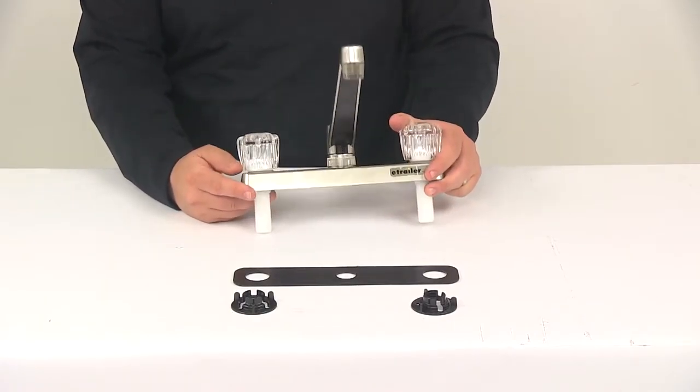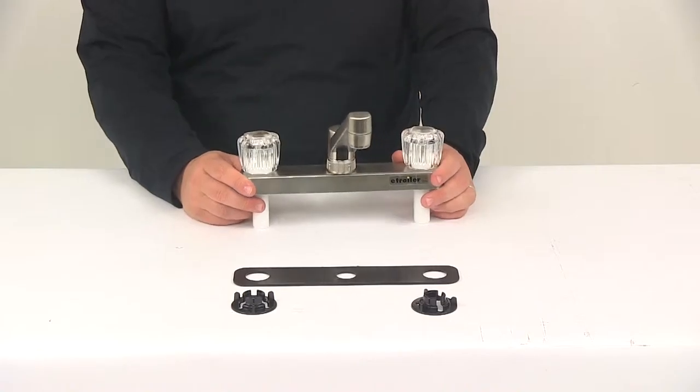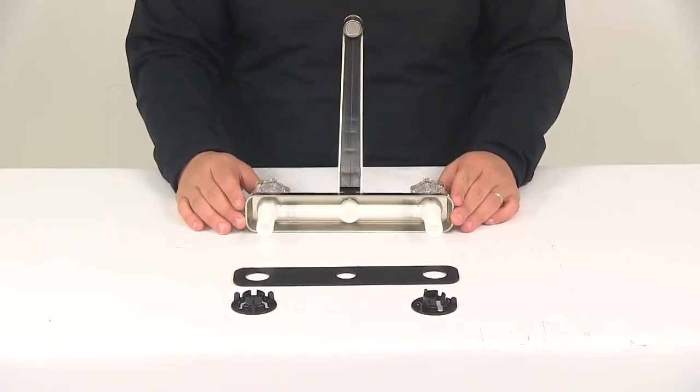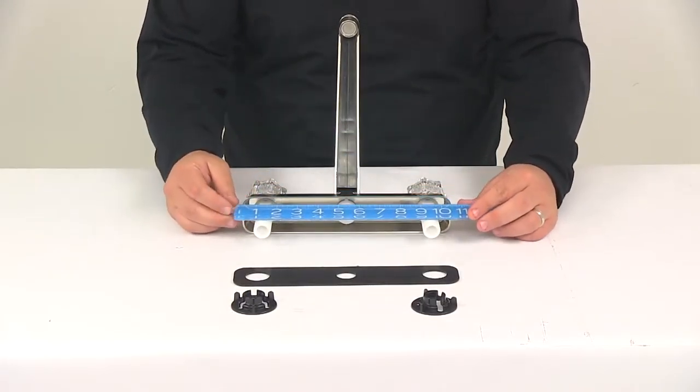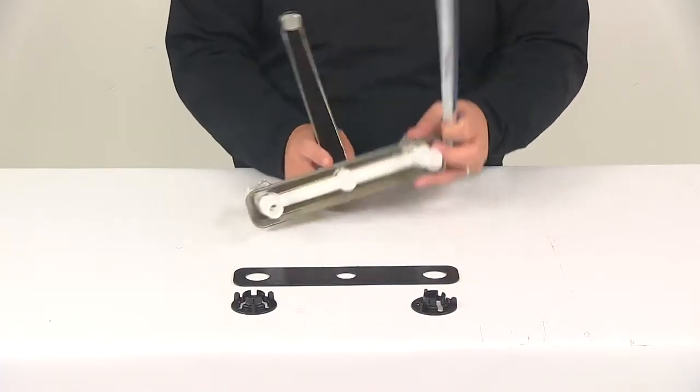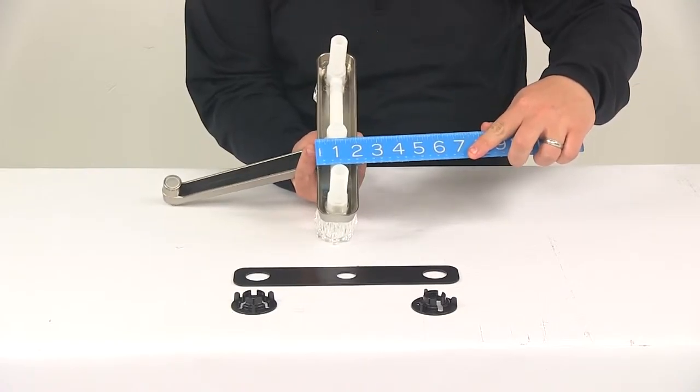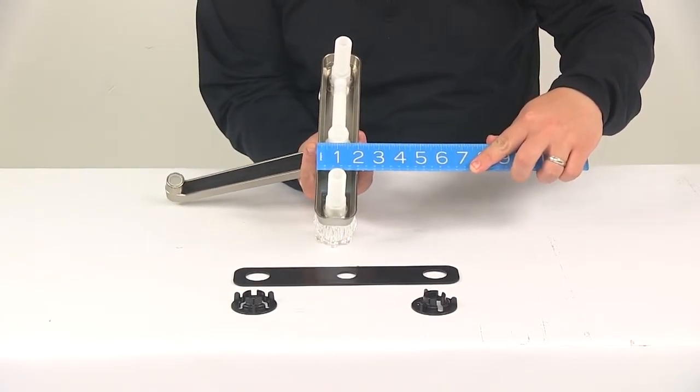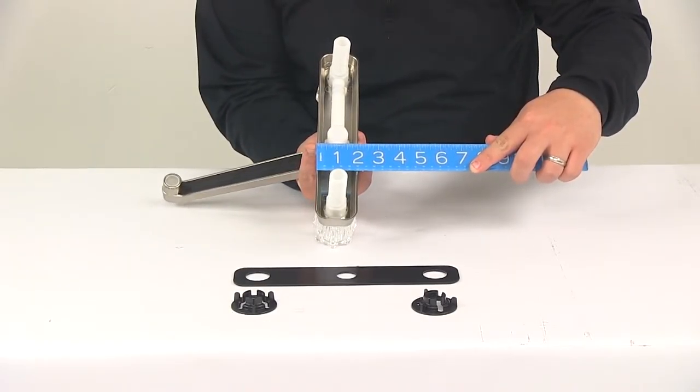The unit is going to feature a washerless cartridge design. A few other measurements I want to go over with you real quick. Here at the base, outer edge to outer edge, we're looking at a measurement of about ten and one quarter inches. Going in this direction, it's going to give us a width measurement of about two inches wide.